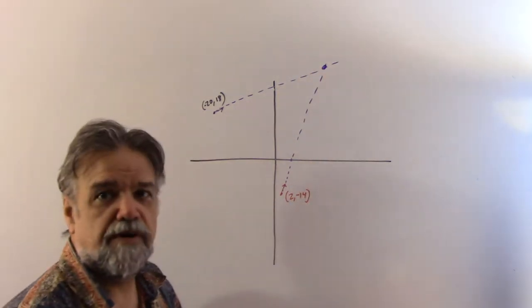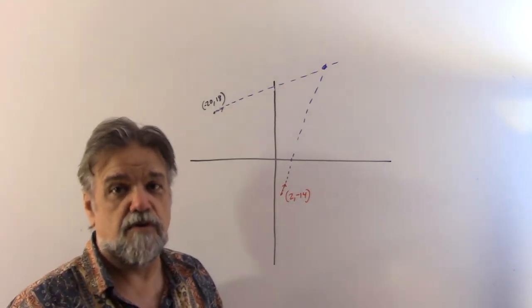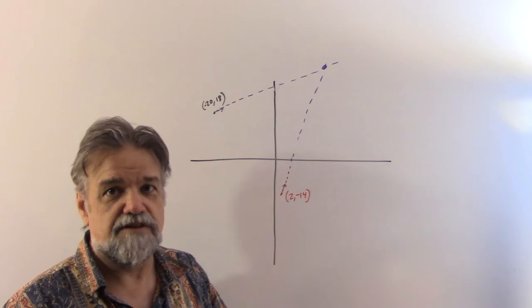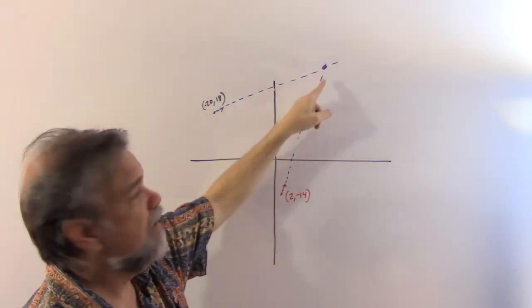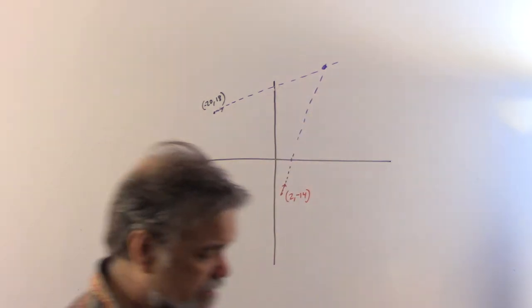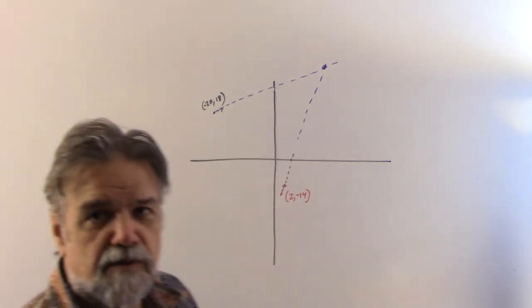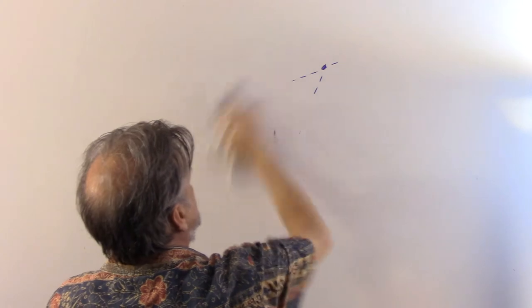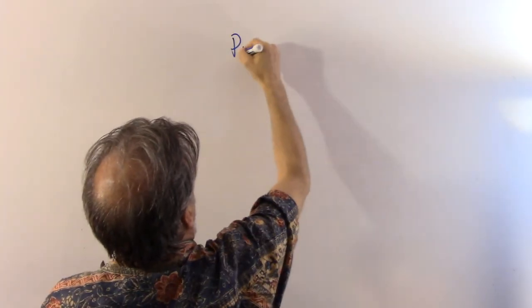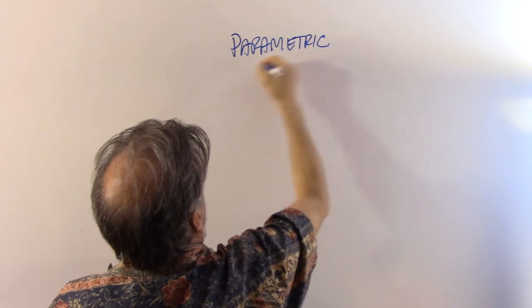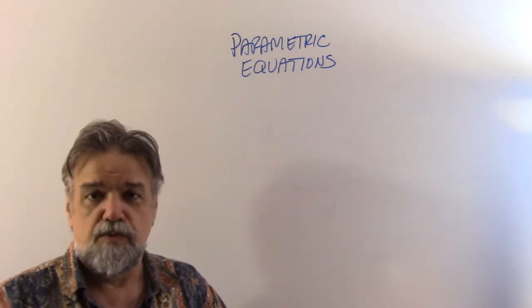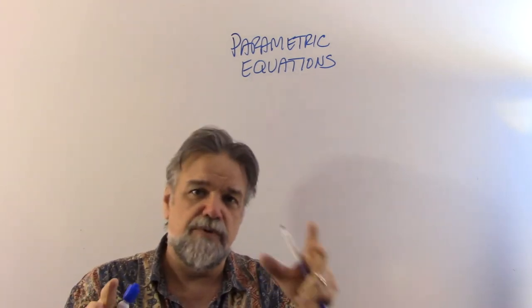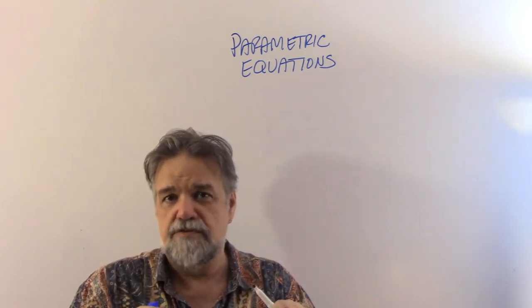Their paths definitely cross, but that doesn't mean they actually hit each other — it just means if they do collide, it'll be right at that crossing point. I need to find that point precisely, so instead of doing it graphically, I'll do it algebraically using what's called parametric equations. With parametric equations, y is a function of x, but we introduce a third variable — a parameter — and usually we use t because it's good for time.